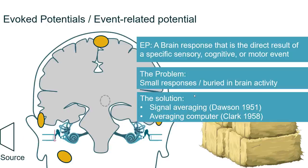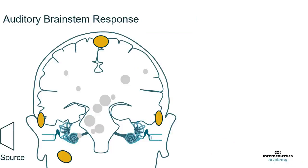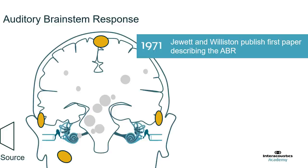Signal averaging works by presenting multiple sounds to the ear rather than just one. If we present multiple sounds, the signal will be constant but the noise or spontaneous activity in the brain will be random. Therefore, if you present enough stimuli, the random noise will eventually cancel out and you'll be left with the signal. The ABR wasn't actually the first response to be recorded successfully — the first was the cortical response, because it is a much larger response than the ABR.